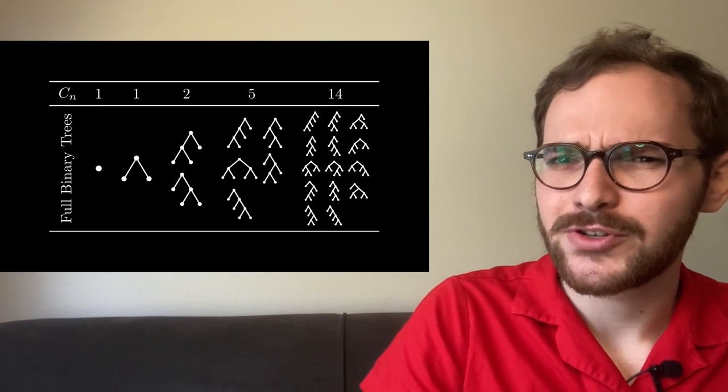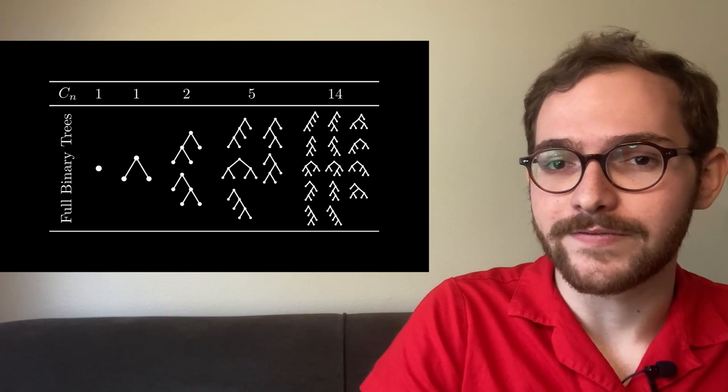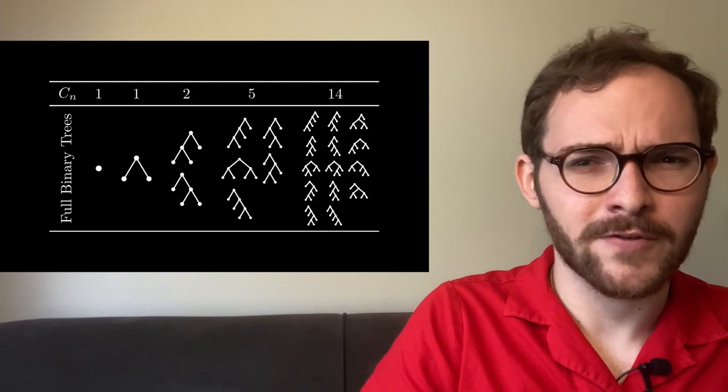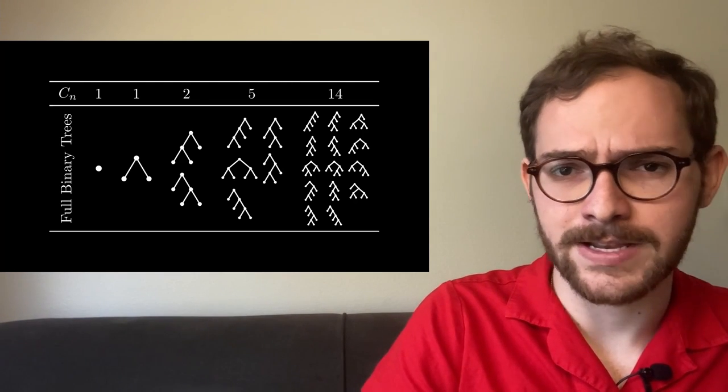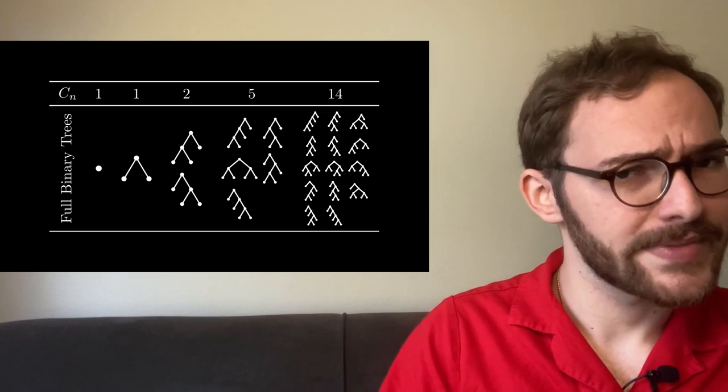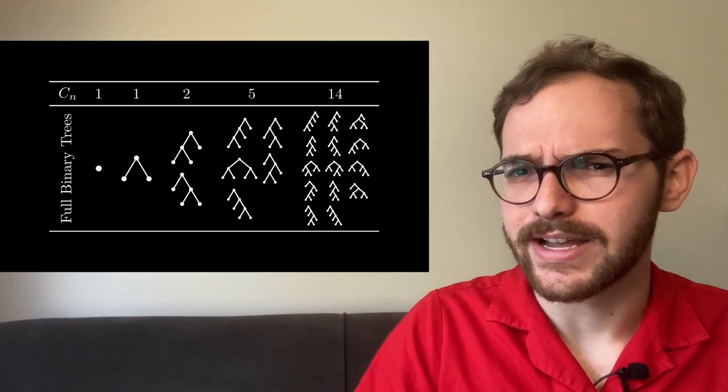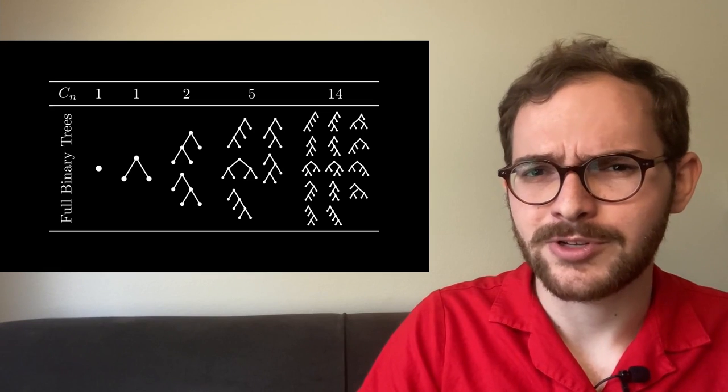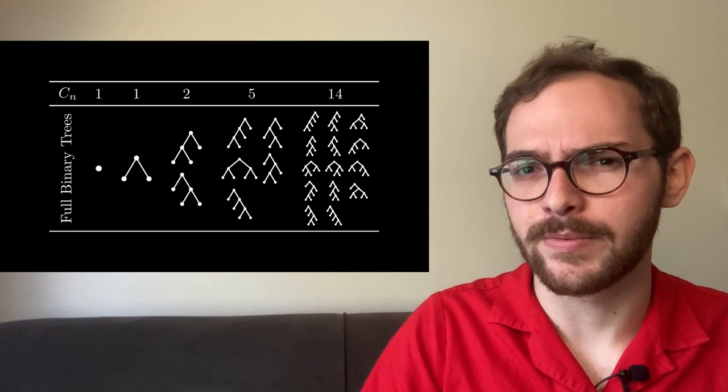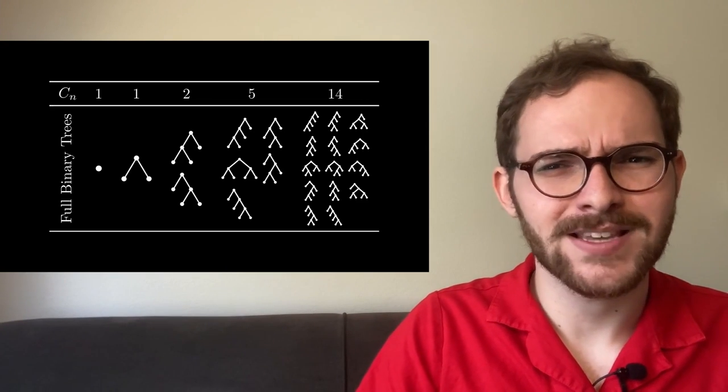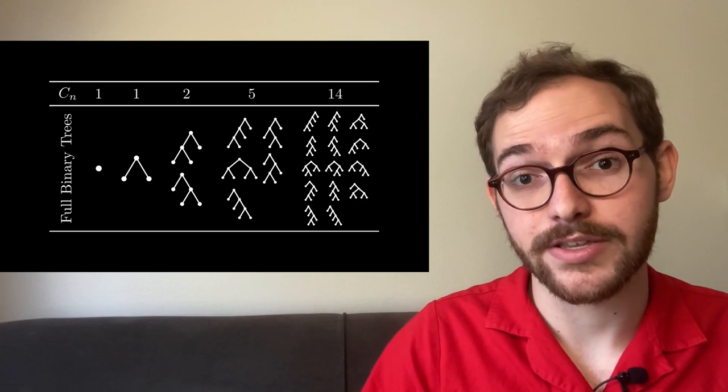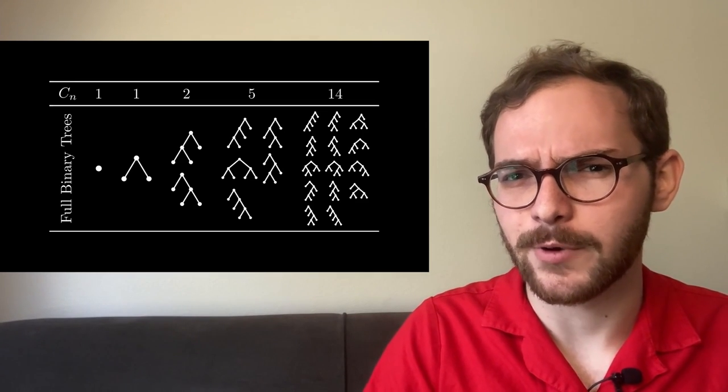If I asked you to explain why the number of Dyck paths and the number of full binary trees was the same, your first instinct might be to find a formula for the number of Dyck paths and find a formula for the number of full binary trees and go 'look, it's the same formula.' But this would be a bit unsatisfying. It would tell us that these two objects are counted by the same numbers, but it doesn't tell us why they should have the same formula. That is, there should be some way to match up binary trees and Dyck paths. And there is. Feel free to pause the video and see if you can find one.